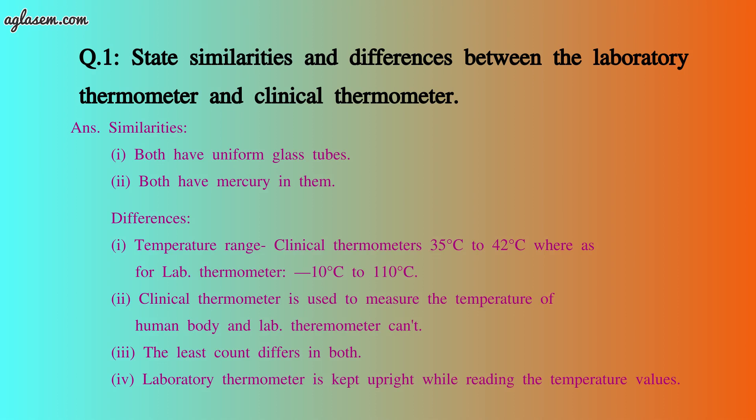Differences: the temperature range of a clinical thermometer is from 35°C to 42°C, while that of a laboratory thermometer is from -10°C to 110°C. Clinical thermometer is used to measure the temperature of the human body; however, a laboratory thermometer cannot be used for that purpose. The least count of both thermometers also differs. Unlike clinical thermometers that can be tilted, laboratory thermometers are kept upright while reading temperature values.